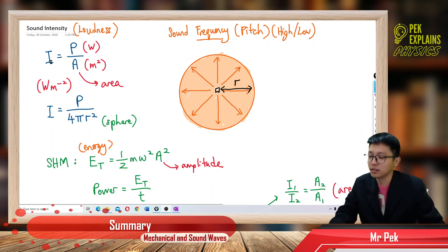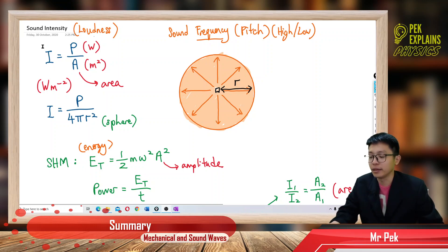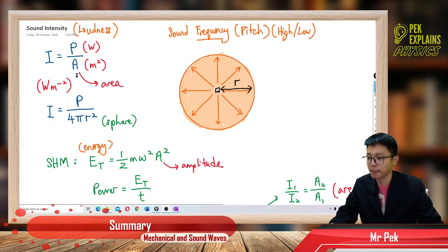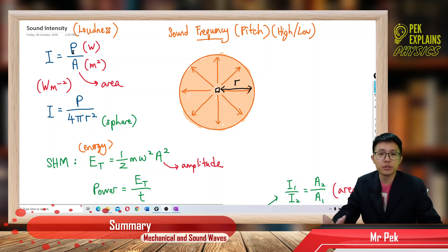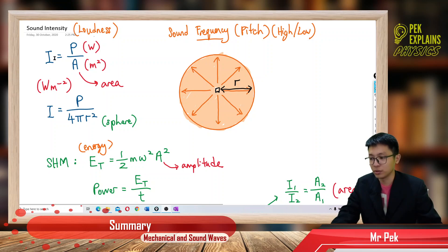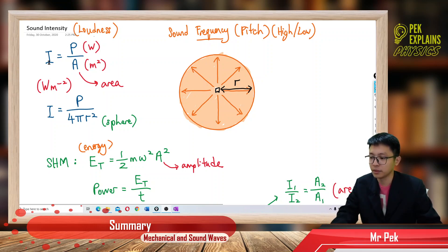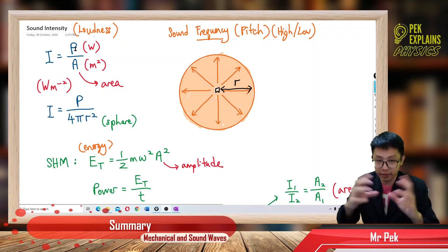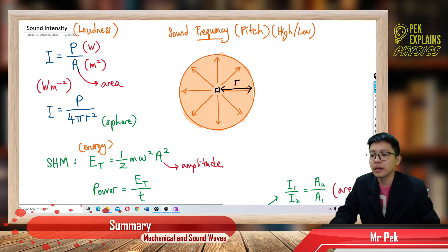Now, intensity — the symbol is I, and the formula is power over area. Since intensity is about the loudness of sound, it is proportional to the power emitted by the sound source. The higher the intensity, the higher the power emitted. So intensity is the power emitted divided by the area distributed.